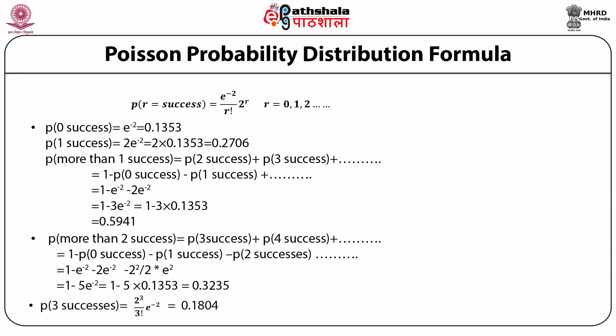For exactly 3 successes: P(x=3) = e^(-lambda) × lambda^r / r! = e^(-m) × m^r / r!. Substitute r = 3 and m = 2, then solve to get the answer.